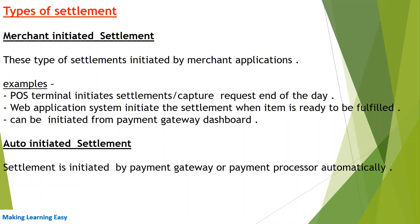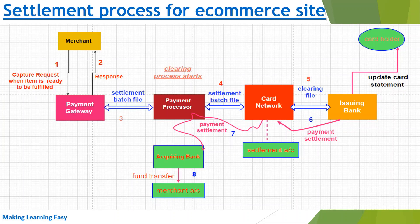There are mainly two types of settlement process: merchant initiated settlement and auto initiated settlement. Merchant initiated settlement is triggered by the merchant's applications — for example, a point of sale terminal initiates the settlement or capture request at end of day. A web application system initiates the settlement when an item is ready to be fulfilled, or this can also be initiated from the payment gateway dashboard. Initiation of the settlement process is normally done through an API call. Auto initiated settlement is initiated by the payment gateway or payment processor automatically.